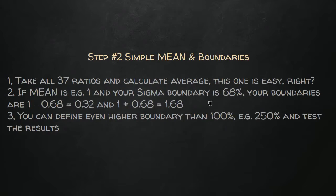Step two: create a simple mean — which means a simple average — and boundaries. You take all the summed ratios and create an average. If the average is 1 and your sigma boundary is 68%, you take 68% of one, which is 0.68. The boundaries are: 1 minus 0.68 equals 0.32 as one boundary, and 1 plus 0.68 equals 1.68 as the other.